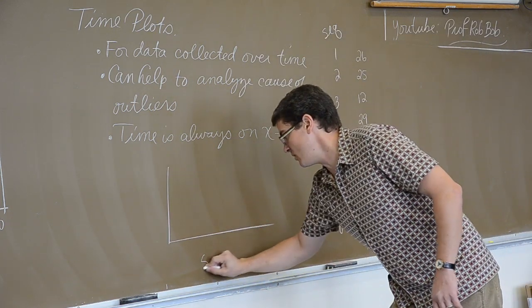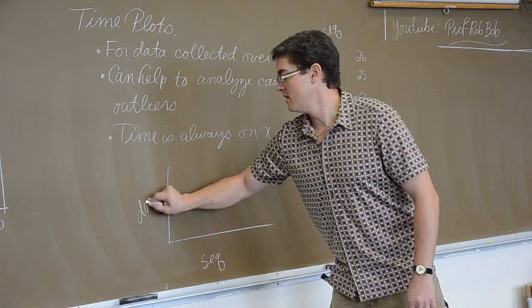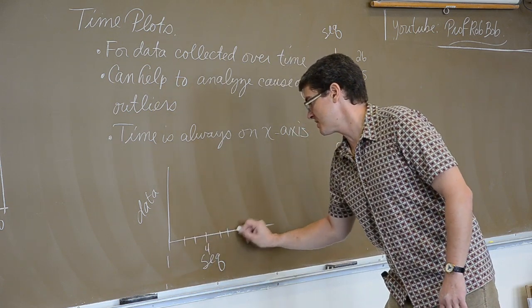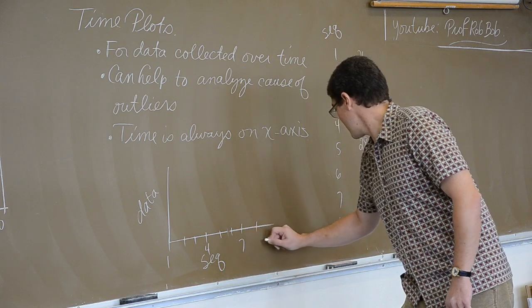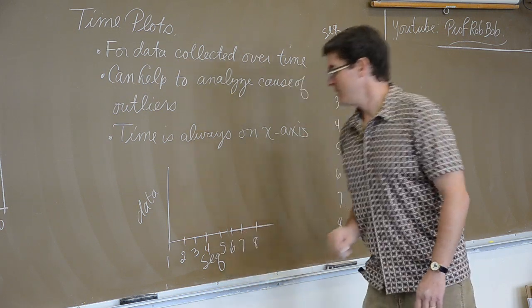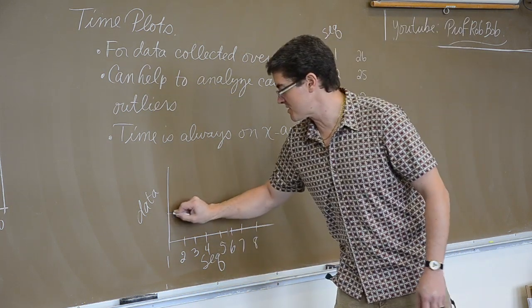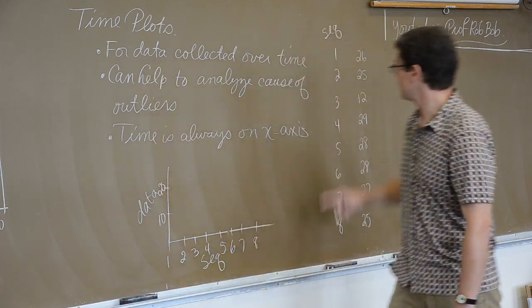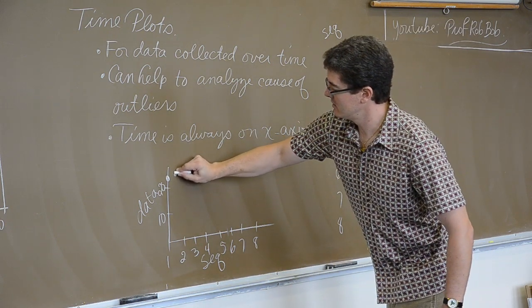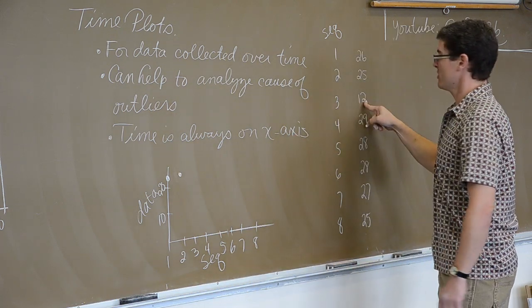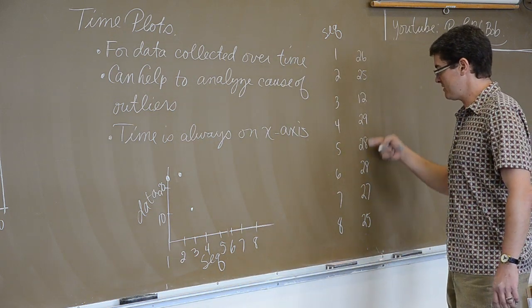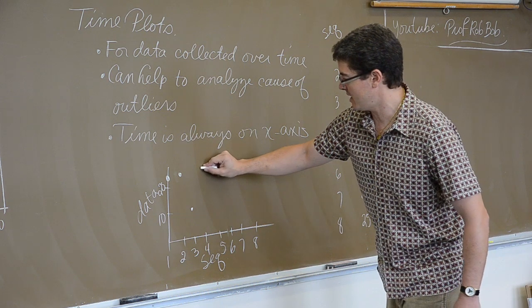So, the sequence is going to be the x-axis, the data the y-axis, and one, two, three, four, five, six, seven, eight, and we stopped at eight. The data is ranging between, let's say this is 10 and this is 20. So, my first measurement was 26. My second measurement was 25. This is just a quick sketch. My third measurement is 12. And then all my other measurements are around 28, 27, 25. So, they would all be kind of like up here somewhere.